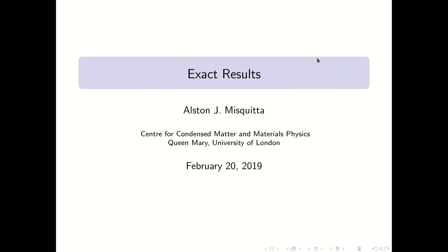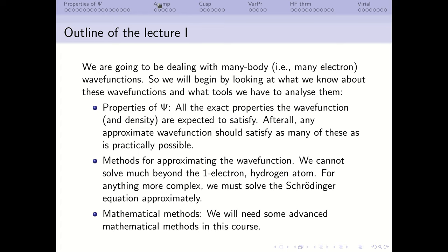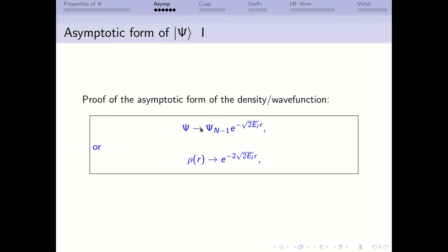We will begin with the asymptotic form of the wave function. What we will show is that the N-electron wave function ψ, when you pull one electron away from it, collapses into an (N−1)-electron part and an exponential part for that one electron. Correspondingly, the density for the N-electron system will decay as an exponential. The exponent is determined by the ionization energy: the density decays as exp(−2√(2I)·r), where I is the vertical ionization energy.